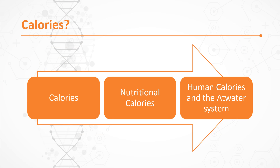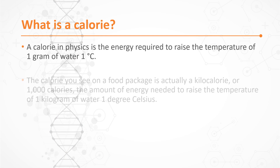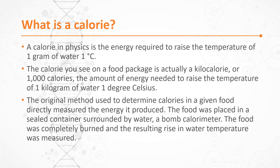There's a certain thing called a calorie. There's another thing called a nutritional calorie. And yet there's a whole different thing called a human calorie — a calorie that we as humans consume. A calorie is literally a measure of how much energy is required to raise the temperature of one gram of water one degree centigrade. The calorie you see on a food package is not the same calorie. That's a kilocalorie — it's 1,000 calories, equivalent to raising 1,000 grams one degree centigrade. A calorie in physics is different than a calorie in nutrition.